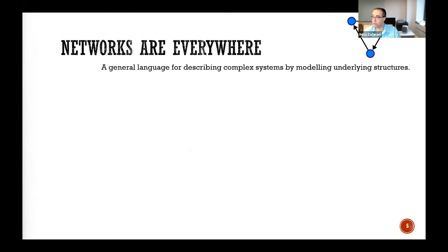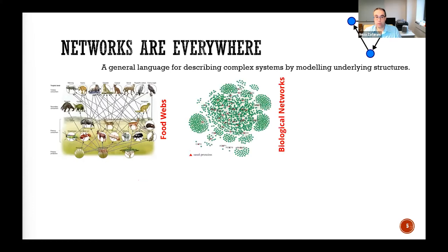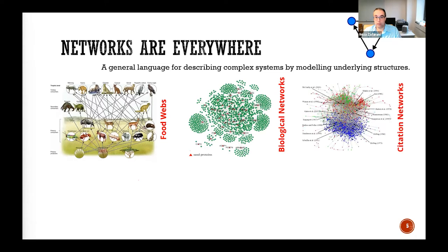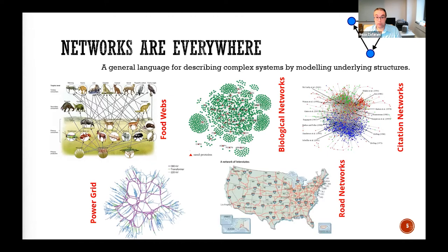Networks are connected with edges, and we have these networks everywhere. It could be a food web with predator-prey networks, biological networks with proteins, citation networks where nodes are papers and edges are citations, a power grid representing the electrical grid, or a road network where nodes are junction points.